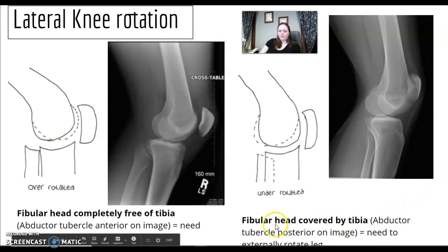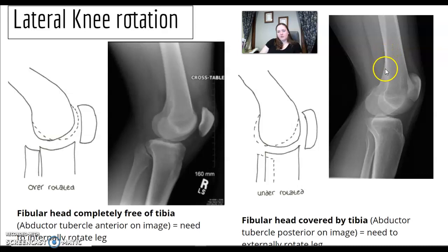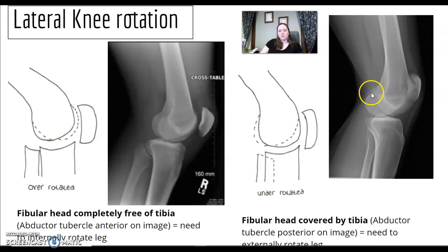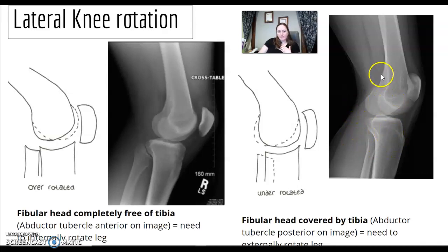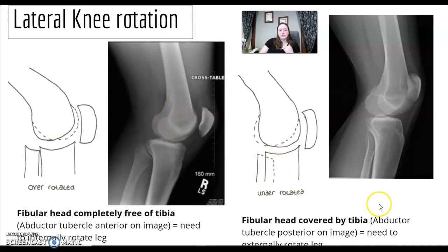The adductor tubercle is posterior on a properly positioned lateral image — as you swoop down the femur, there's a little indent rounding around the back. When you see this ridge posteriorly, that indicates under-rotation. In textbook, you look at that position. If it's anterior, that indicates over-rotation.